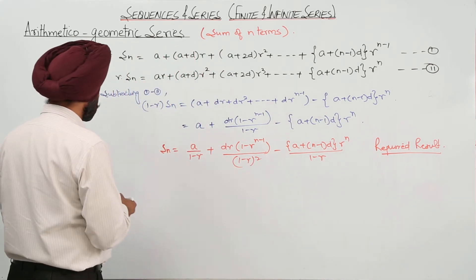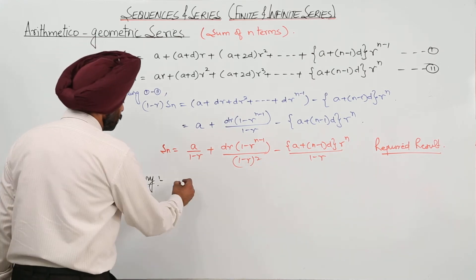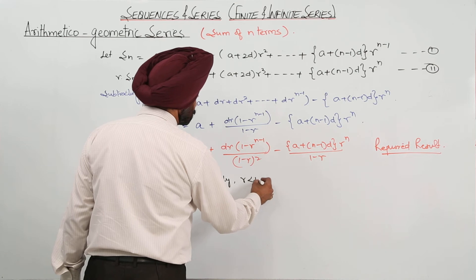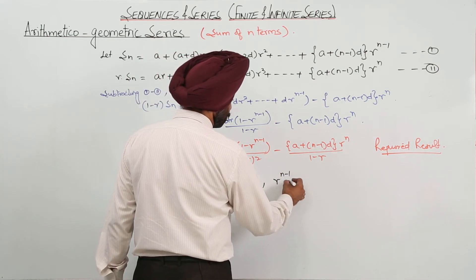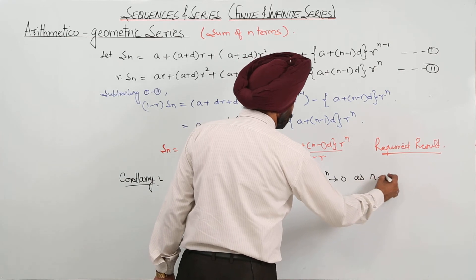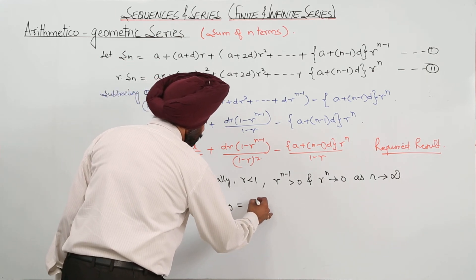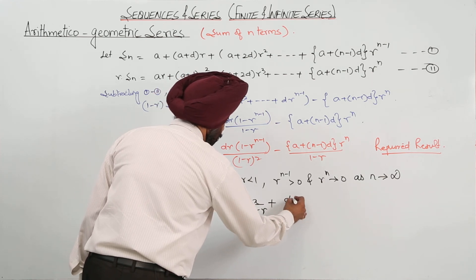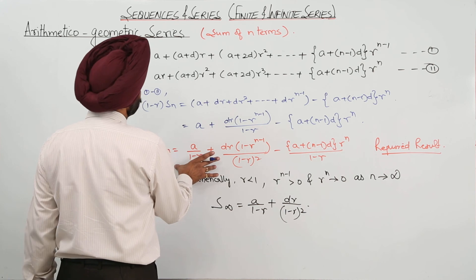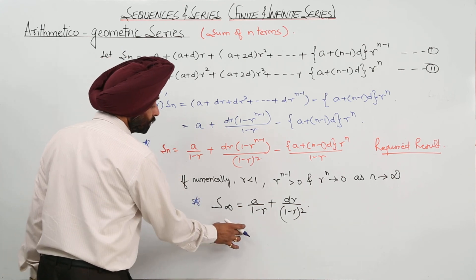As a corollary: if the absolute value of r is less than 1, then r raised to power n approaches 0 as n approaches infinity. Therefore, the sum of the infinite series is a upon (1 minus r) plus dr upon (1 minus r) squared. So we have two formulas: one for the sum of n terms and one for the sum of infinite terms.